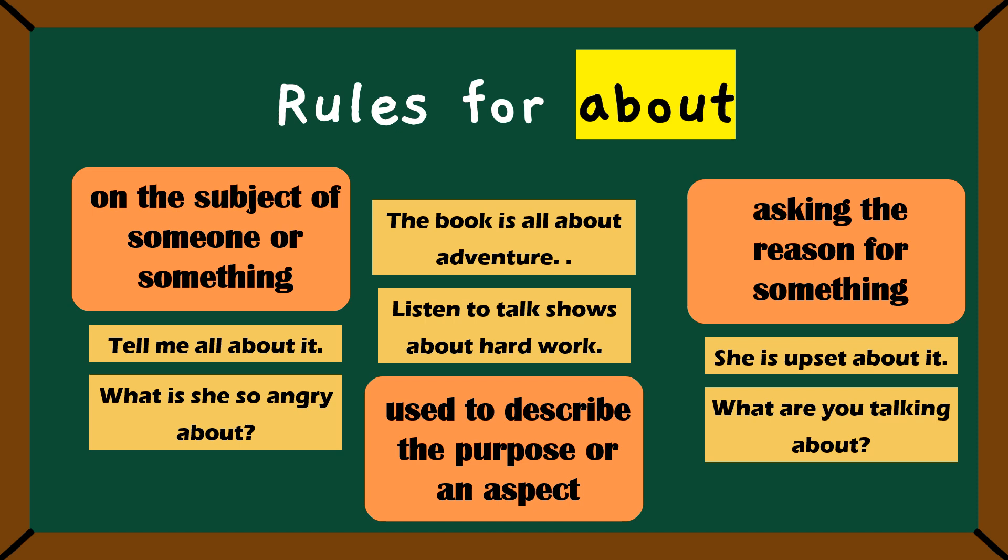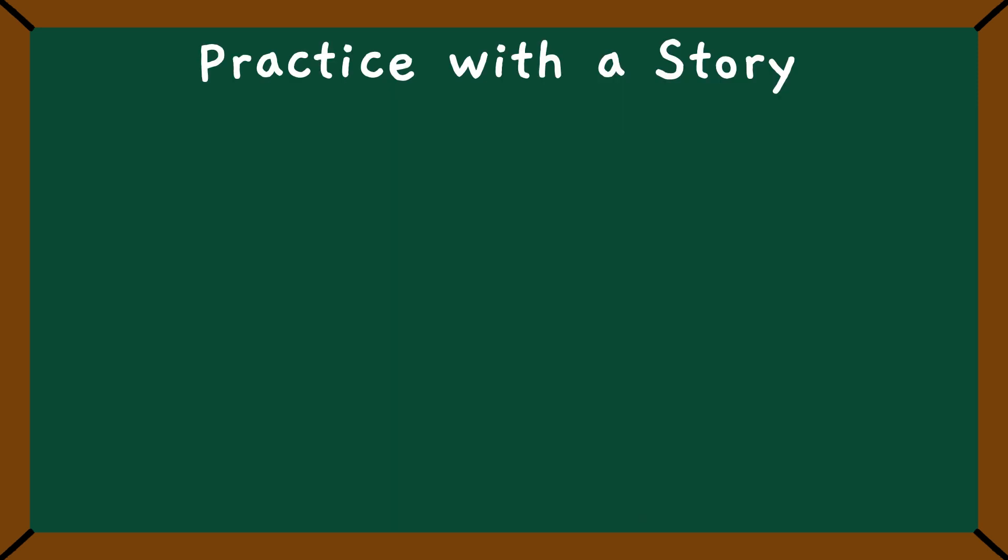All right kids, now you know how to use with, of, about, for, etc. They might be small words, but they are super important for making sentences. Am I right? So, now that we know each preposition, let's see them in an action. Here's Maxie's story.